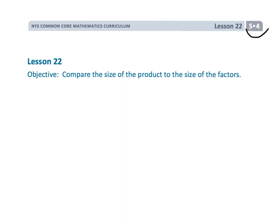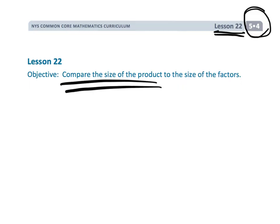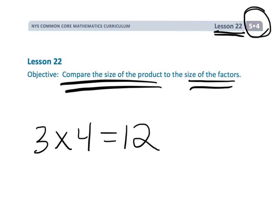This is grade 5, module 4, lesson 22, where we're going to compare the size of the product based on the size of the factors. Basically, it's kind of common knowledge that students will say multiplying makes the answer get bigger.